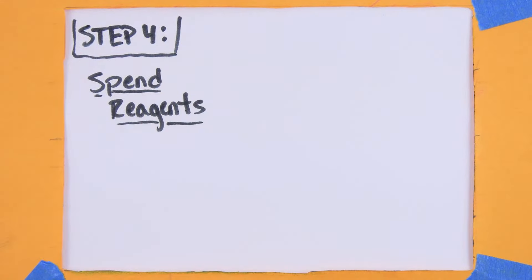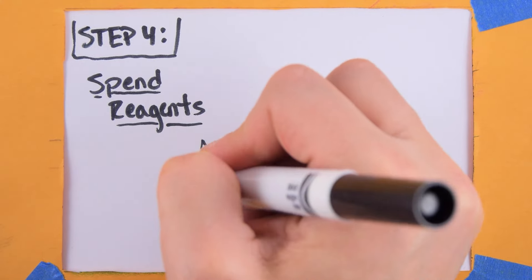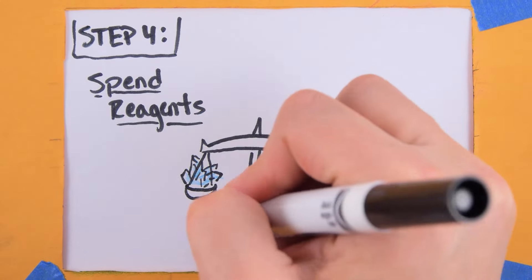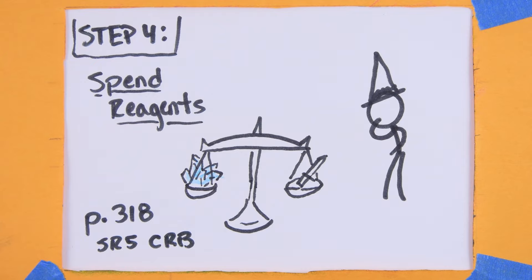Step 4: Spend reagents. On page 318 of the SR5 core rulebook is a table with the karma cost for bonding all the different types of foci. You must spend a number of reagents at this point equal to what the karma cost would be to bond the focus you're making. These are used up whether you succeed or not.